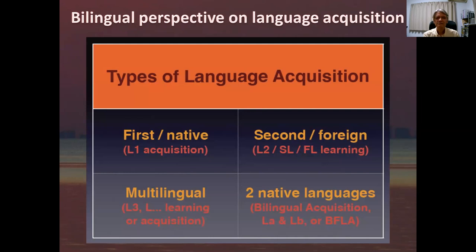I have thought about what are some types of language acquisition. The first is like a first language or a native language, and we can call that L1 — a person's first language. And then moving to the right, a second or foreign language. So it can be called L2, or SL for second language, FL for foreign language learning. This is a kind of deliberate learning that people have to study to gain a language. And then after around 12 or 13 years old, it becomes more of an effort to gain a language.